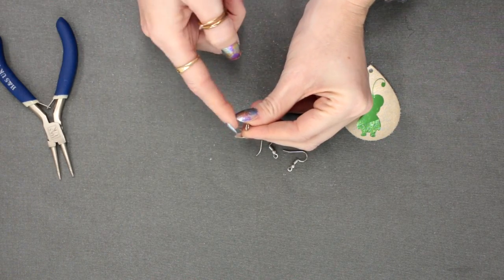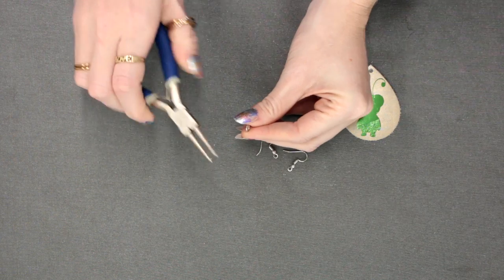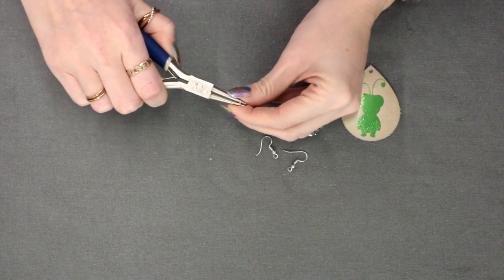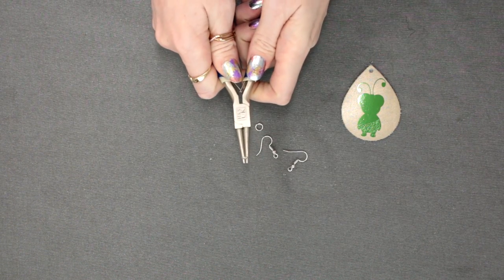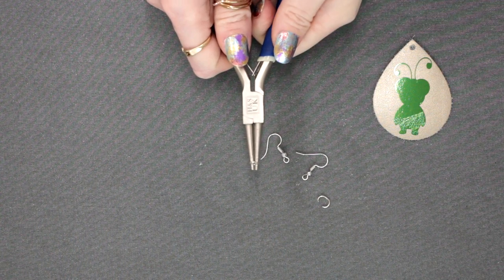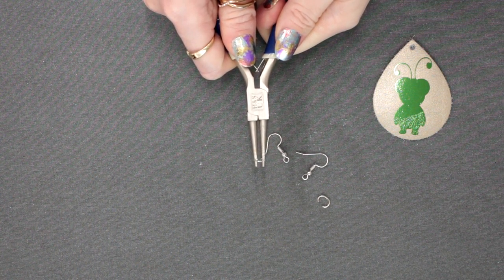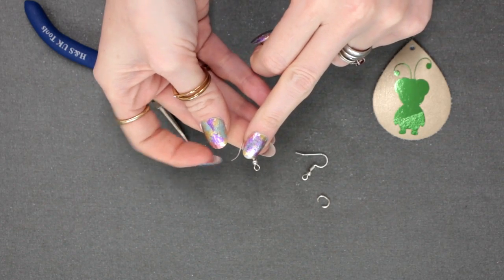I have got some earring pieces and some extra hoops, so you need two of each. The first thing you want to do is get your little hoop and your little tool and just open it slightly. You want to do the same with the other one.